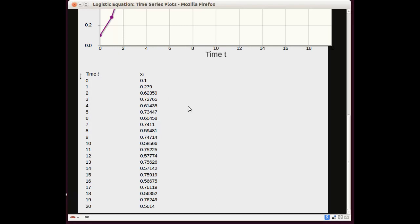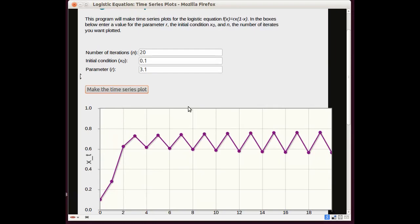But now let's look at the long term behavior of this. What's happening in the long run? The orbit starts to wiggle and then it seems to settle into a cycle. Let's see it a little more clearly.